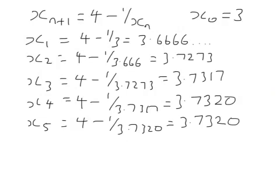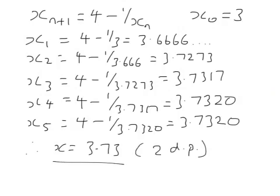It's now quite clear that these values are converging onto a number just above 3.73. The question asked for the answer correct to two decimal places, so therefore x equals 3.73 to two decimal places. It's important to write that out at the end — don't just leave the iterative values and expect someone to work it out for themselves.